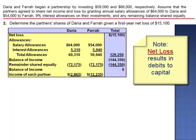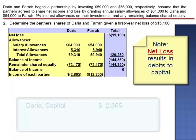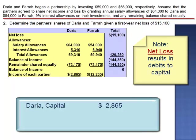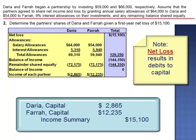A net loss means that there has been an outflow of assets, and that outflow needs to be matched with a reduction in capital. The journal entry to record this net loss would be a debit to Daria's capital account for $2,865, a debit to Farah's capital account for $12,235, and a credit to income summary.